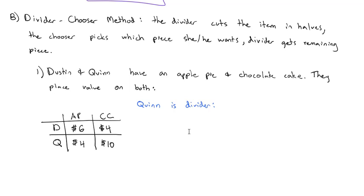Quinn puts a total value of 10 plus 4, which is $14 for both items. So his fair share would be half of that, $7. So Quinn is going to divide up the apple pie and chocolate cake into two parts, where one part is worth $7 and the other part is worth $7, as defined by Quinn. Because remember, our assumption is he has no idea what Dustin is thinking in terms of value.